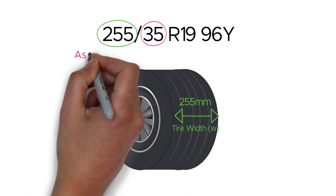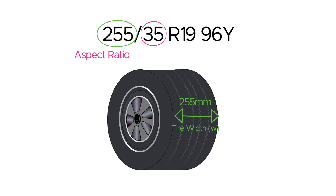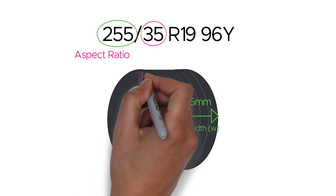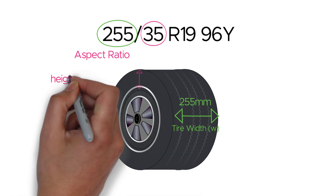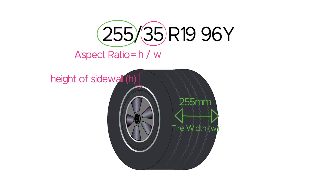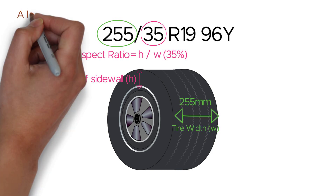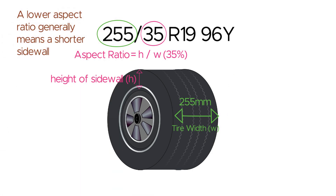The number 35 indicates the aspect ratio. It represents the ratio of the height of the tire's sidewall to its width. In this example, the height of the tire's sidewall is 35% of its width. A lower aspect ratio generally means a shorter sidewall, which can enhance cornering stability and responsiveness, but may result in a firmer ride compared to tires with higher aspect ratios.